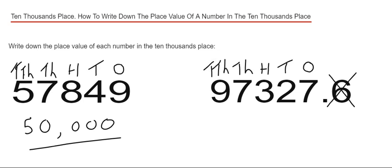So nine tens of thousands can be written as 90,000. Thanks for watching guys, see you next time.